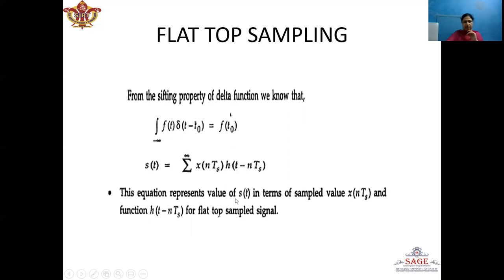So S(T) equals the summation of X(N·T_S) · H(T − N·T_S). This expression represents S(T) in terms of the sampled values X(N·T_S) and the function H(T − N·T_S), which is a train of pulses repeating every T_S. The amplitude of these pulses varies according to X(N·T_S).